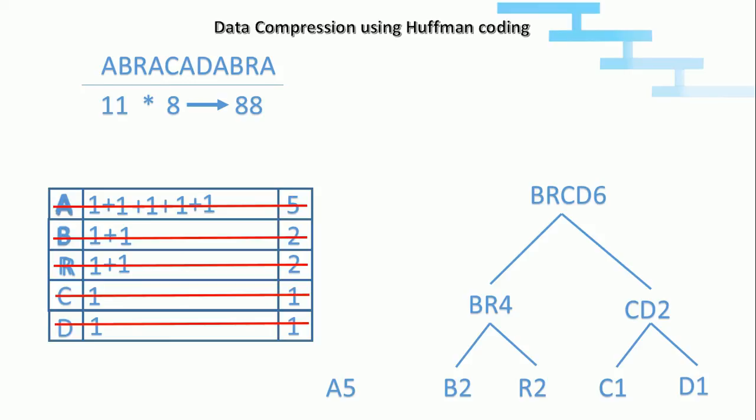Now we will combine A's frequency and BRCD which has frequency 6. The total frequency is 11. Always the root node should match the number of characters in the word. In our case, the root node value is 11 which is exactly matching with the number of characters 11. After that we need to mention 0 to the left hand side and 1 to the right hand side. That is 0 to the left hand side of the tree and 1 to the right hand side of the tree. We need to point all the edges like this, left branch is 0 and right branch is 1.